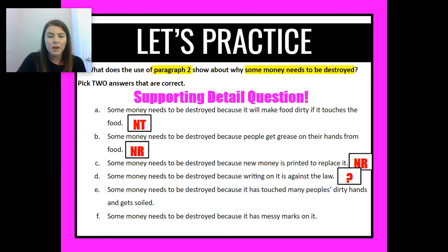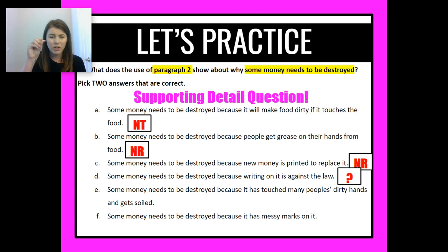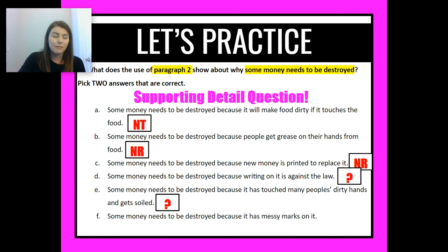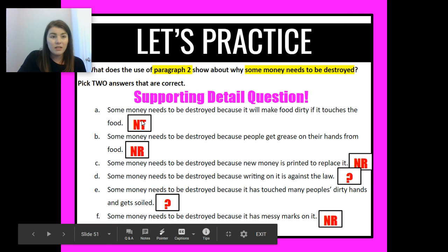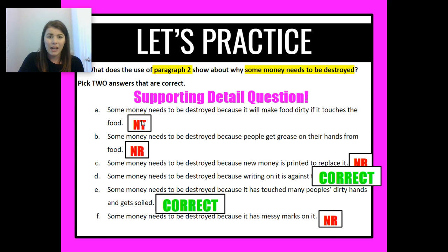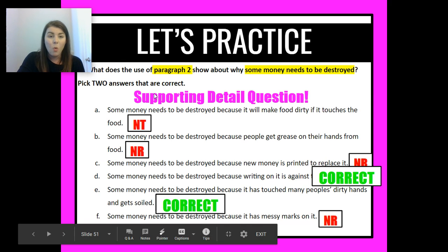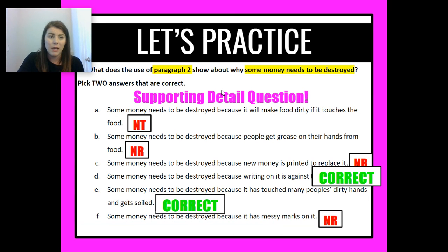Answer E: some money needs to be destroyed because it has touched many people's dirty hands and gets soiled. The word soiled means dirty, so this is saying paragraph two tells us money needs to be destroyed because it gets really dirty from people touching it — that might also be true. Answer F: some money needs to be destroyed because it has messy marks on it. Just having one messy mark doesn't seem enough for destruction, so that doesn't seem relevant. I needed to pick two correct answers, and I've selected D and E — both show what paragraph two tells us about why some money might need to be destroyed.